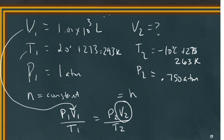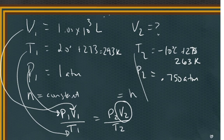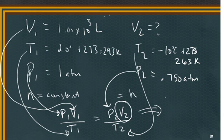The initial volume goes there. The initial temperature goes there. The initial pressure goes there. The final temperature goes there. The final pressure goes there. Plug all those numbers into your calculator, solve for V2, and the answer you will get is 1,200 liters.